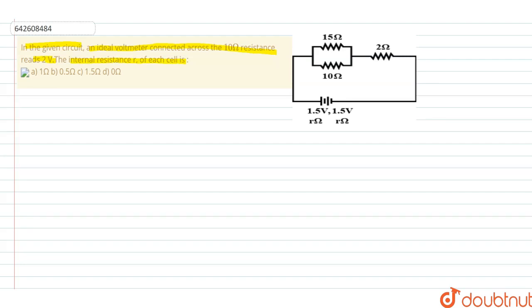that we have the battery of cell 1.5 and 1.5 volt having internal resistance small r, small r. So the current, a common current i, flows into the entire circuit.